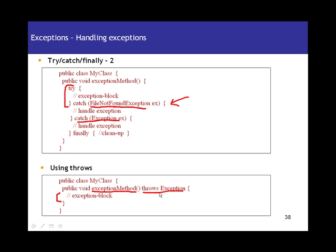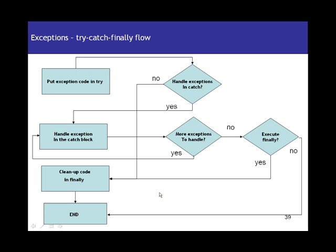So basically, when you have exceptions in your code, these are the two things you can do: handle your exceptions using try-catch-finally, or throw the exception to the method which called your method. Apart from these standard exception classes, you can write your own exception classes — simply write a class that extends Exception, and you have your own exception class which you can throw, catch, and handle in a similar fashion.